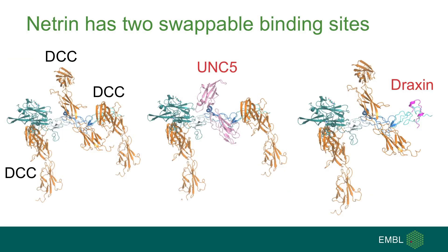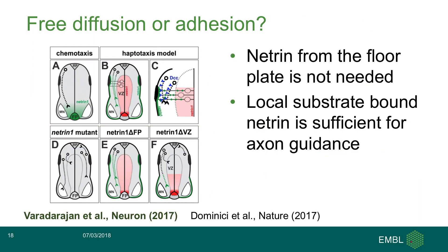Now we have two DCC sites on Netrin that can swap with other actors: namely UNC5 at site 2 and Draxin at site 1. So there is a triangle of interactions among Netrin, Draxin, and DCC. In the meantime, a question was raised in the axon guidance community: does Netrin guide axons through free diffusion or is it locally expressed?